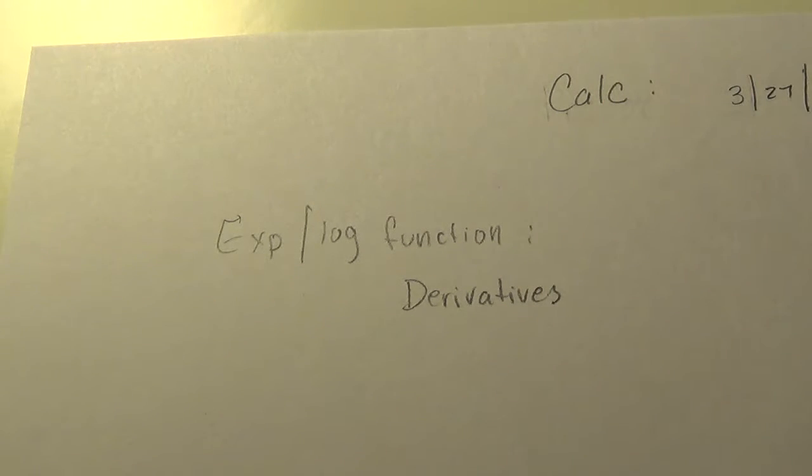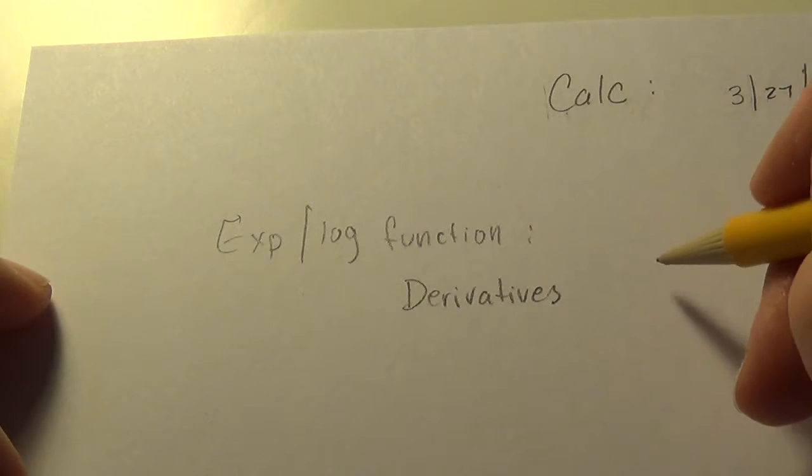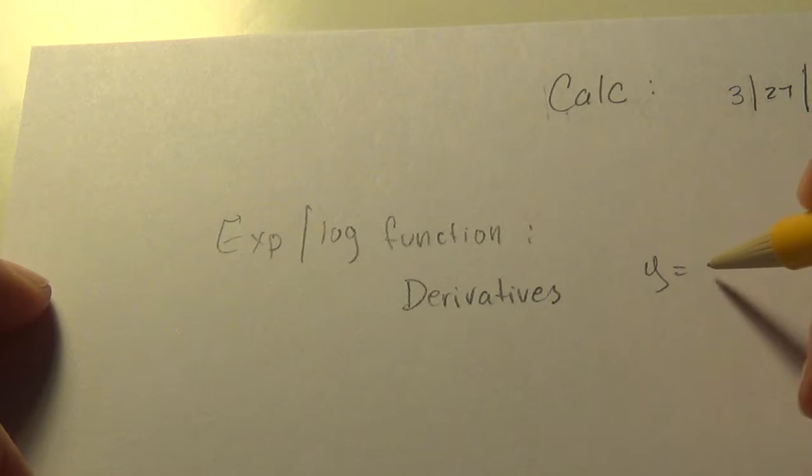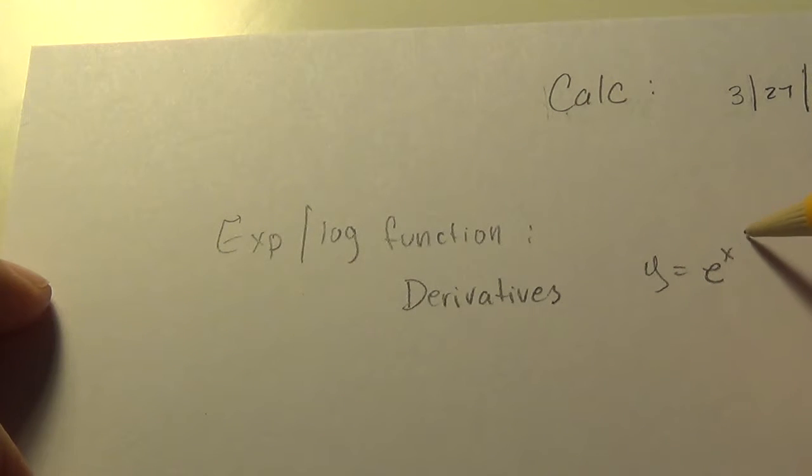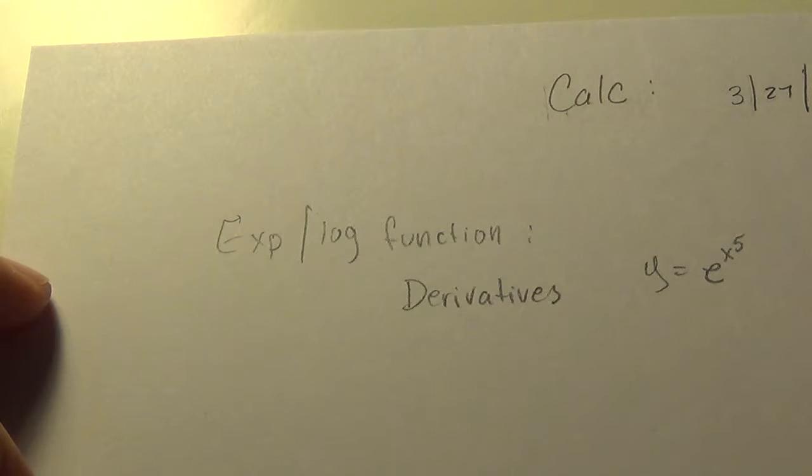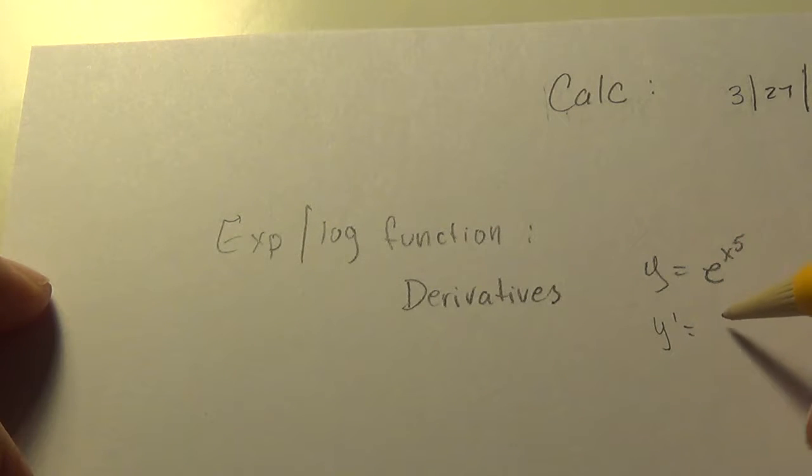So if you would look at expressions with exponentials and logs and remember how to take the derivative, an example would be like y equals e to the x to the fifth.